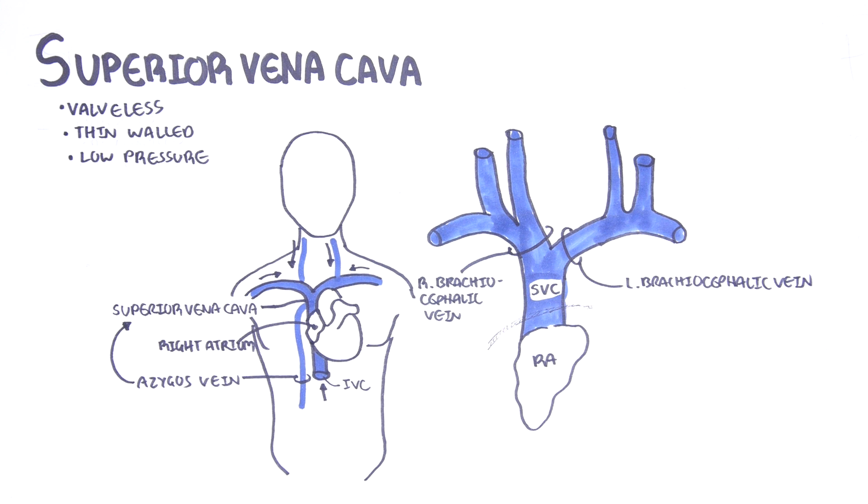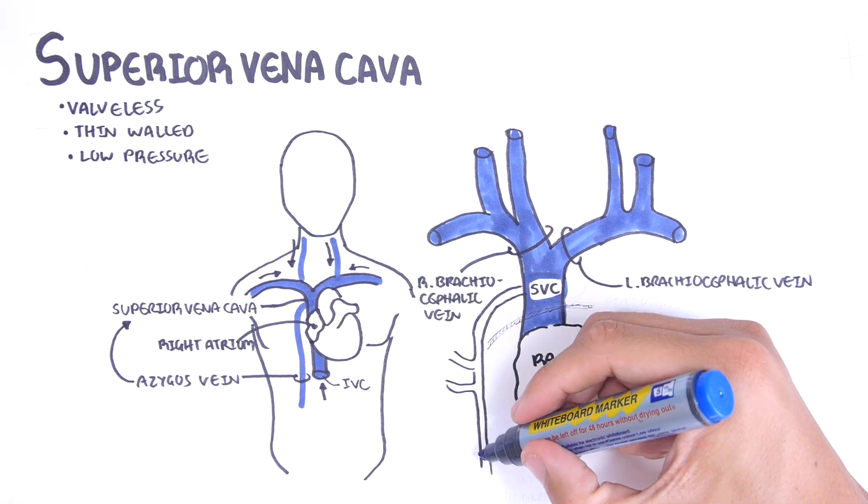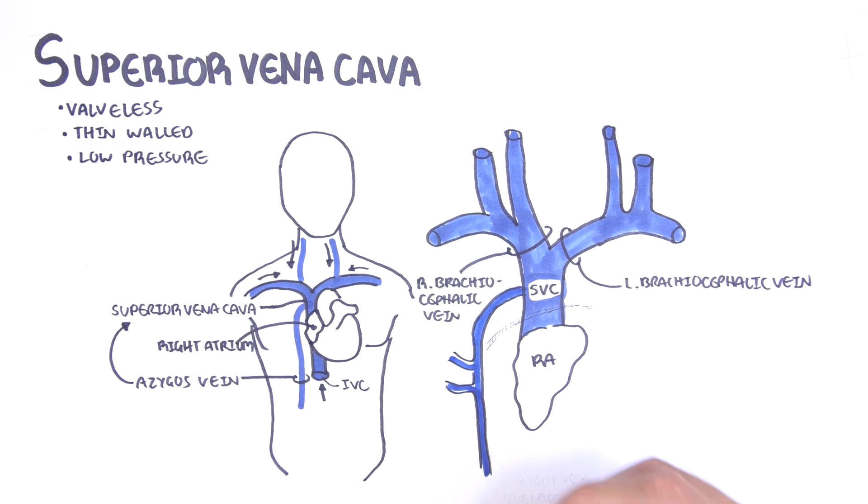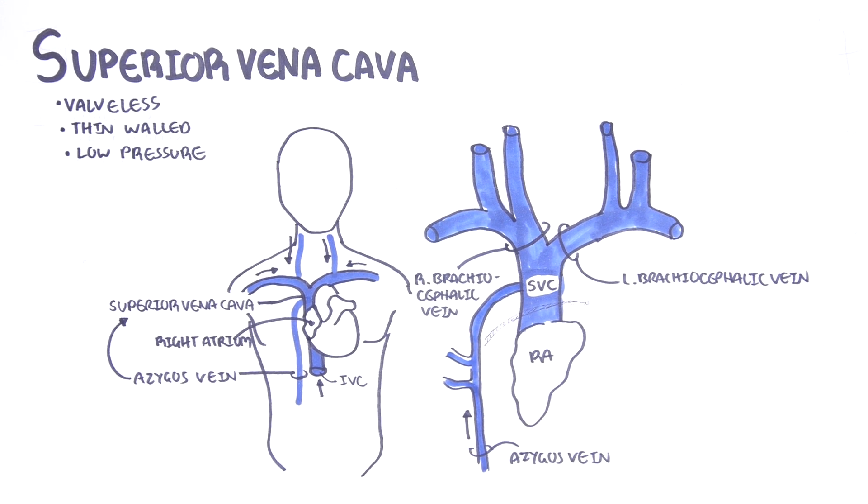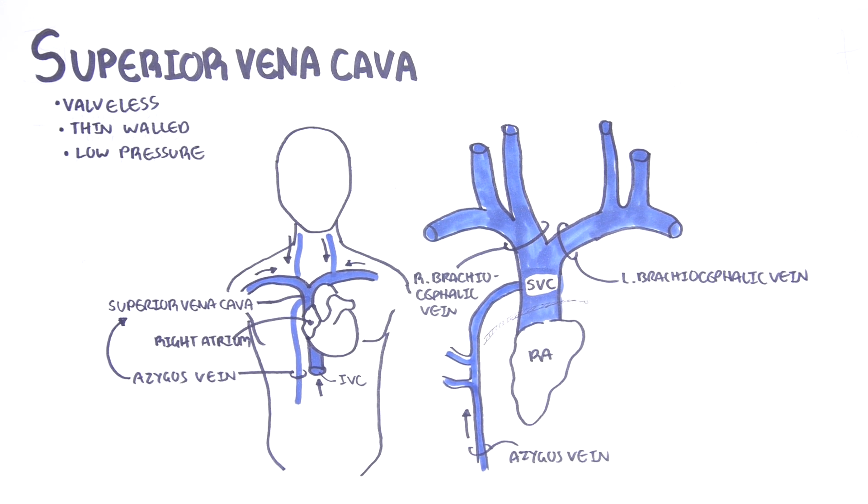Halfway along its course before it enters the pericardium which wraps around the heart, the superior vena cava receives the azygos arch. This is the second main tributary.